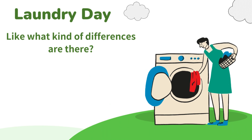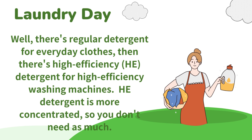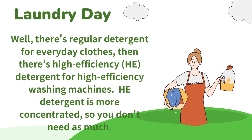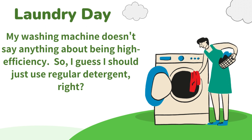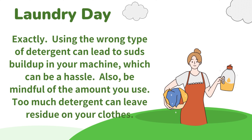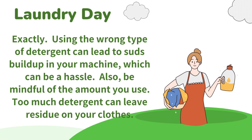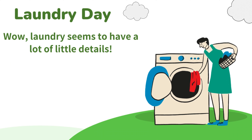Like, what kind of differences are there? Well, there's regular detergent for everyday clothes. Then there's high efficiency. My washing machine doesn't say anything about being high efficiency, so I guess I should just use regular detergent, right? Exactly. Using the wrong type of detergent can lead to buildup in your machine, which can be a hassle. Also, be mindful of the amount you use. Too much detergent can leave residue on your clothes.